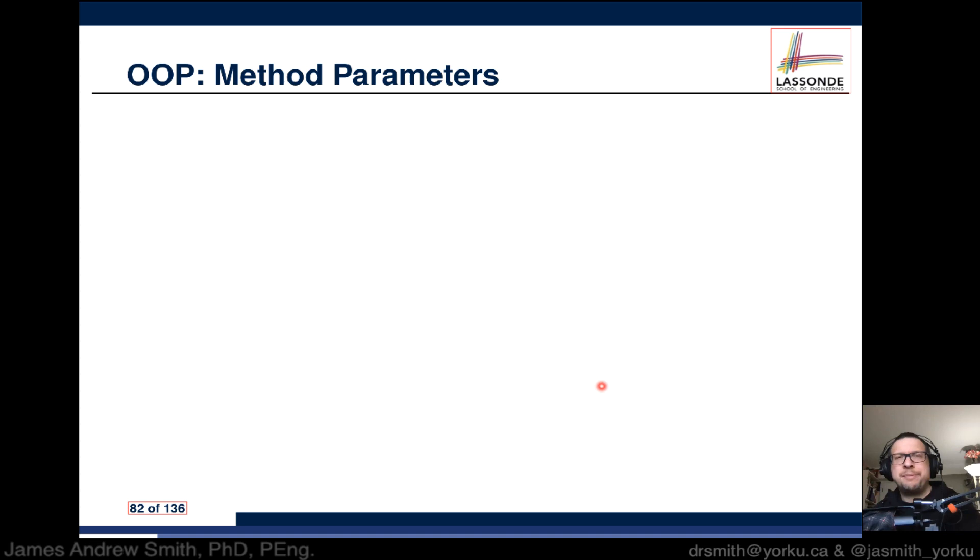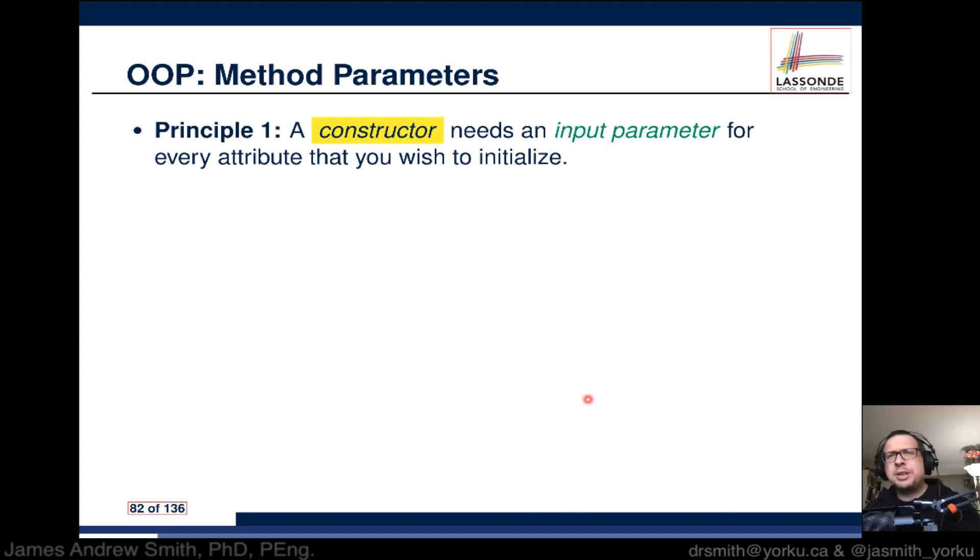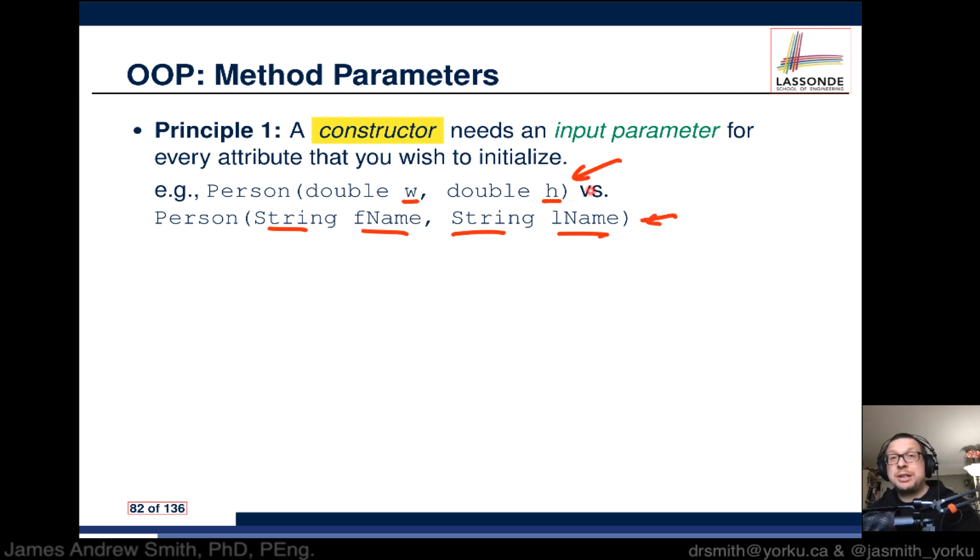Principle number one: A constructor needs an input parameter for each attribute that you wish to initialize. You don't have to initialize all attributes, but each one that you do want to, you have to have an input parameter for it. For instance, if I have a constructor for a class called Person and I have a double w for weight and double for height, that'd be okay. Person first name and last name where the two input parameters are strings - I don't necessarily have to initialize their weight and height here, and I don't have to initialize their names.